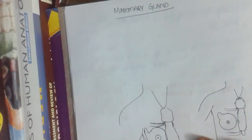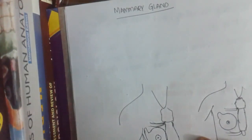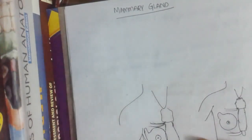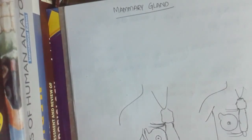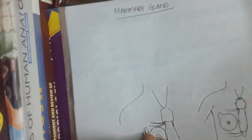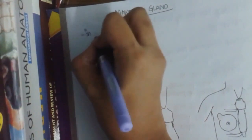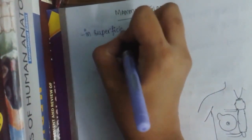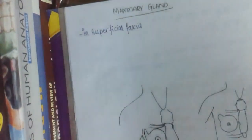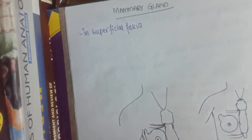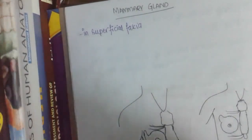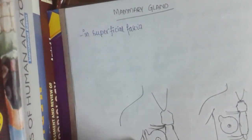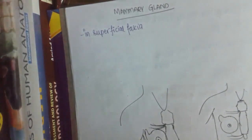Hello friends, today I would like to discuss the mammary gland. Till now we have completed skin and superficial fascia. The mammary gland, or breast, is located in the superficial fascia in the pectoral region. This mammary gland is present both in females and males, but it is rudimentary in males and well developed in females at puberty.